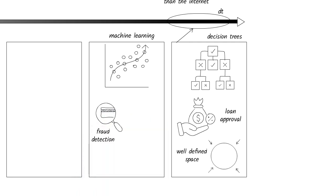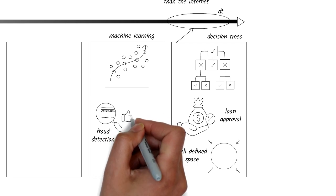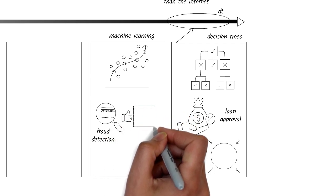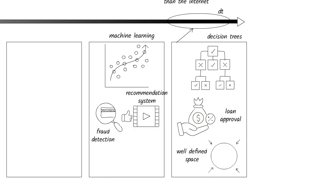For instance, machine learning powers the fraud detection systems that protect our credit card accounts. You might have had your credit card automatically blocked on a suspected transaction. Another everyday application of machine learning is the movie recommendation engines behind services like Netflix and Amazon. These systems analyze your past viewing and purchasing behavior to suggest what you might enjoy next.